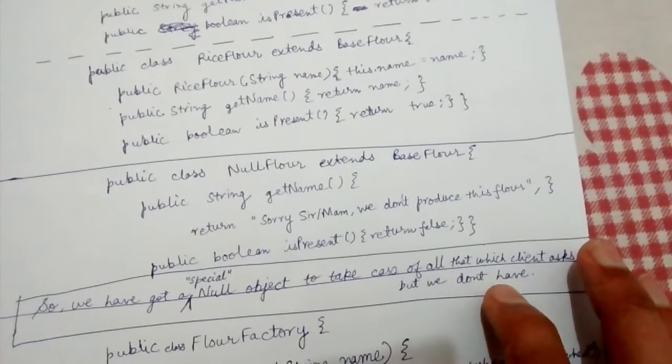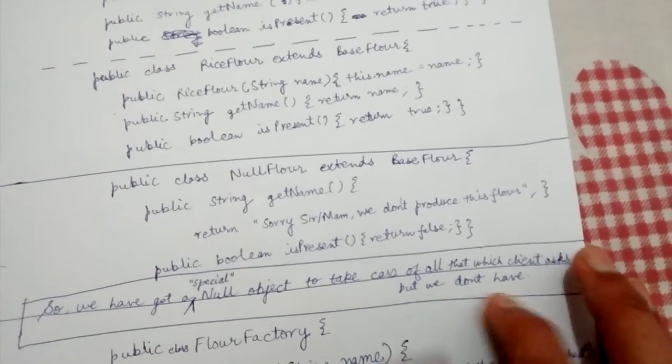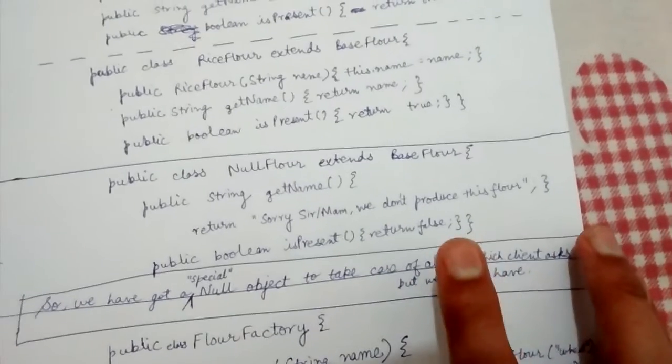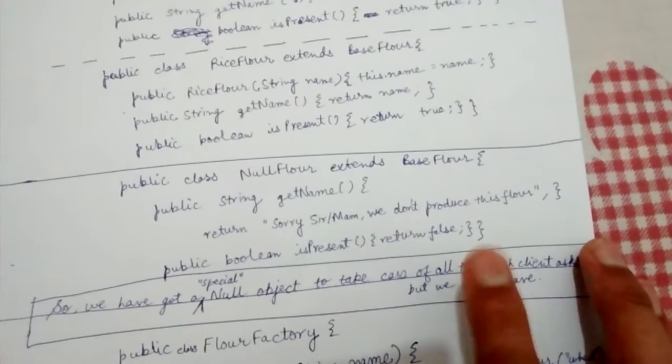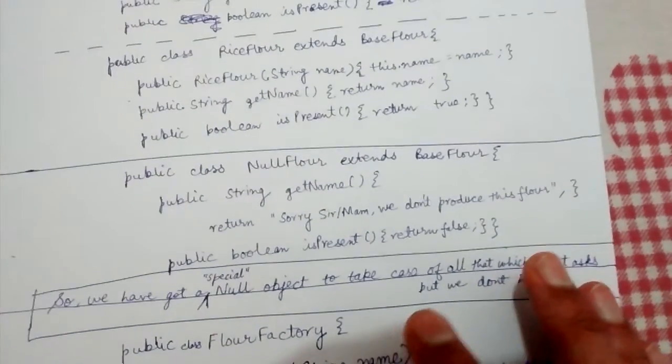This NullFlour takes care of all the cases in which a client asks for a flour that we don't have. It's acting like a placeholder for all those kinds of flours which are not present in our factory, and isPresent returns false.